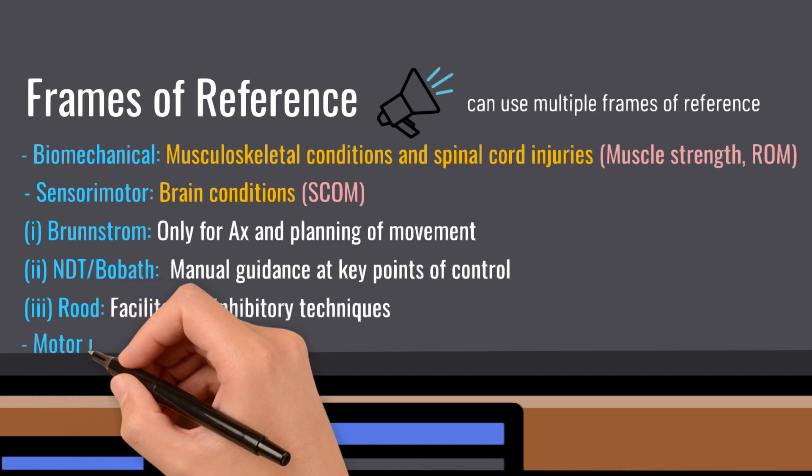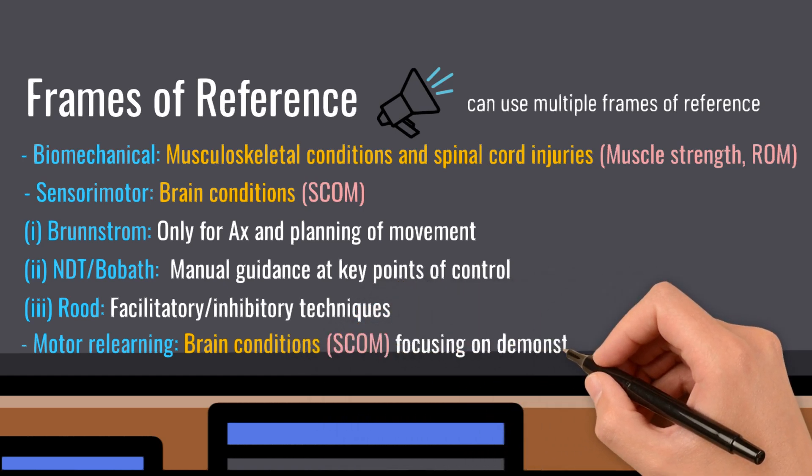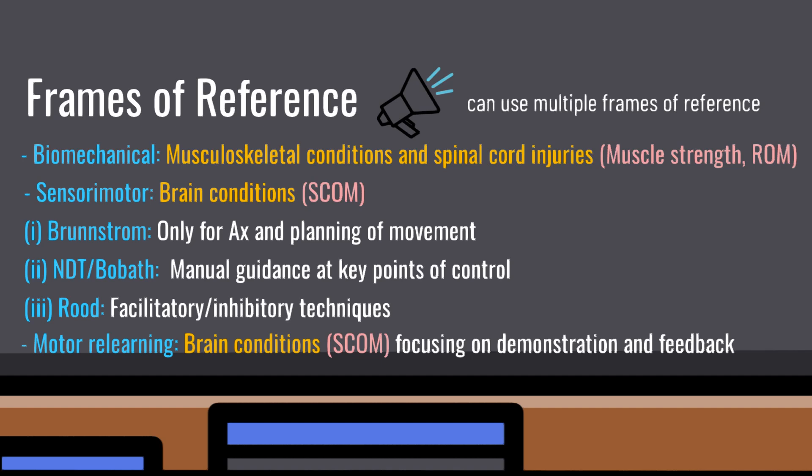The motor learning — also called the Kahn-Shepard — frame of reference is also only used to treat brain injuries or brain conditions, focusing on restoring things like selective control of movement. Principles from this frame of reference include visual demonstration or verbal feedback to the client. Note that the treatment manuals third-year students receive contain mostly treatment principles under each client factor derived from various frames of reference — for example, under selective control of movement, there is already a summarized list of principles to select from. However, the treatment manual may not specify which frame of reference each point is derived from; their theory notes will provide a better description.